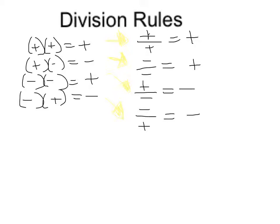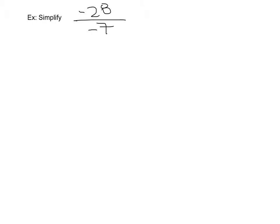We're going to do one example of division, and then we will work on our Google Forms. We have negative 28 divided by negative 7. I have a negative divided by another negative, so my answer is going to be positive — the answer is 4. You can check your work: 4 times negative 7 does get me negative 28, and that should always work when you are dividing. So you really want to be careful with your signs on these.